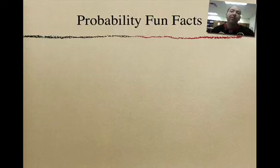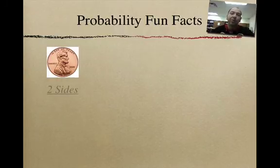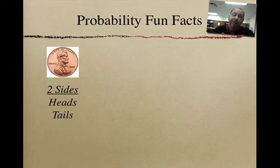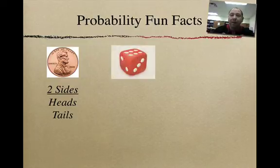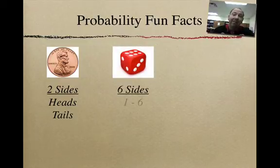Now, here's some probability fun facts. And I think a lot of times we assume that people know that coins have two sides. There's a heads and a tail. Now, you're probably sitting there laughing going, what in the world is this guy going over? Dice, when we talk about a die, it has six sides.